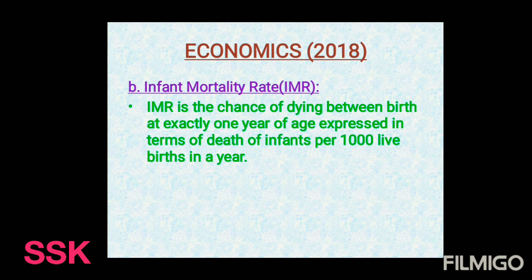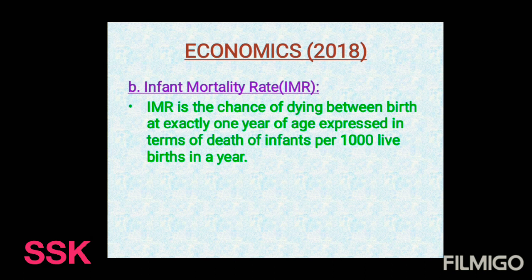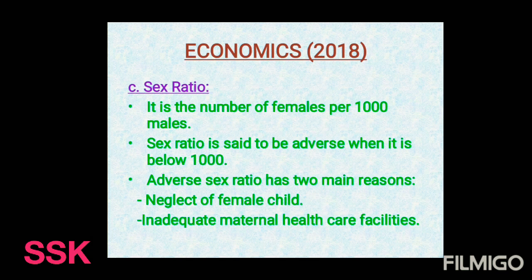Point B: Infant Mortality Rate (IMR). IMR is the chance of dying between birth and exactly one year of age, expressed in terms of deaths of infants per one thousand live births in a year. If infant mortality is high in a region, it indicates poor healthcare — lack of hospitals, dispensaries, and doctors in that area.